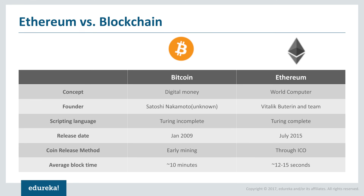The core idea behind Bitcoin was to bring decentralized digital money into the world that was not governed by anyone, giving people complete freedom to decide and work with it. There were a lot of challenges with the existing monetary system. But when you come to Ethereum, although it is a derivative of Bitcoin blockchain, it's often referred to as the second generation of blockchain, because people have understood what blockchain can be used for beyond the cryptocurrency market.